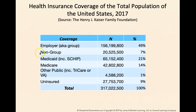There is also something called non-group, which is private health insurance coverage as well. These are people that buy their own health insurance. This would include people that buy their health insurance through the marketplaces as stipulated by the Affordable Care Act, otherwise known as Obamacare. That's about 7 percent of the population. The second biggest coverage group is Medicaid — about 21 percent of the population receives coverage from Medicaid, including the State Child Health Insurance Plan.